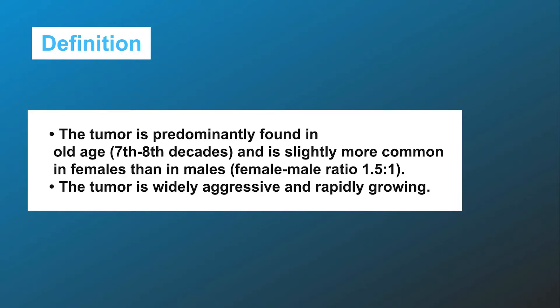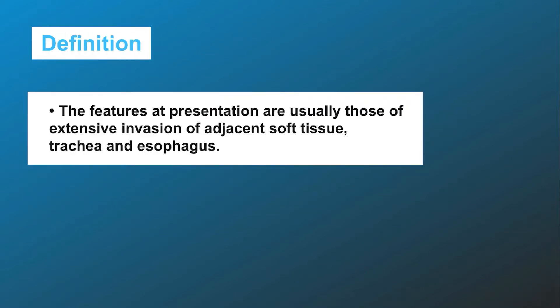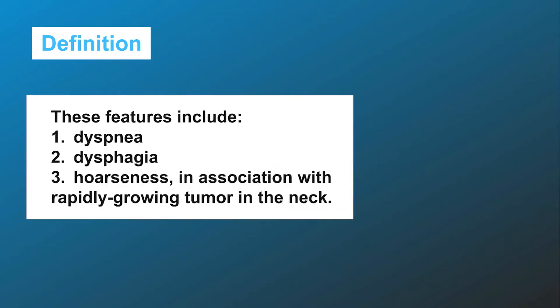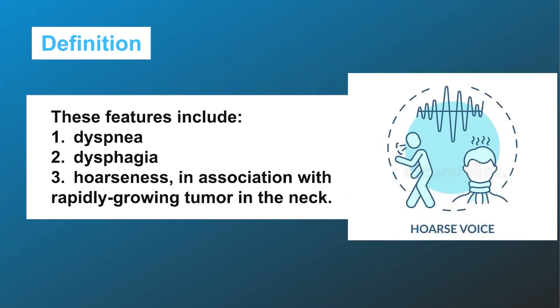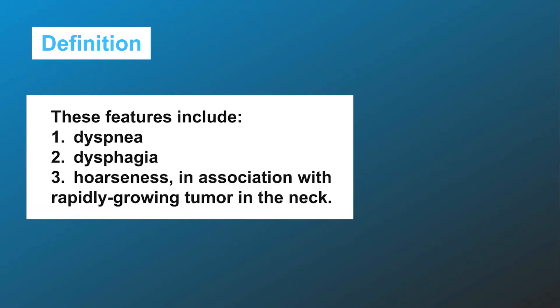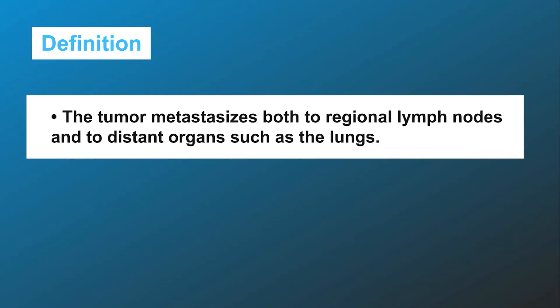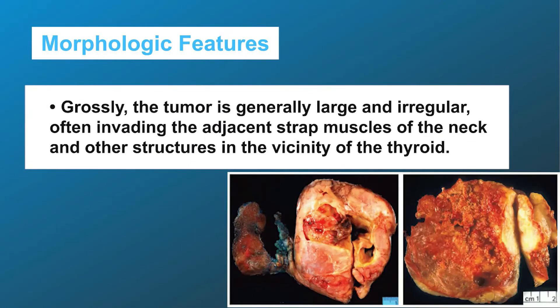The tumor is widely aggressive and rapidly growing. The features at presentation are usually those of extensive invasion of adjacent soft tissue, trachea, and esophagus. These features include: one, dyspnea; two, dysphagia; three, hoarseness — in association with a rapidly growing tumor in the neck. The tumor metastasizes both to regional lymph nodes and to distant organs such as the lungs.